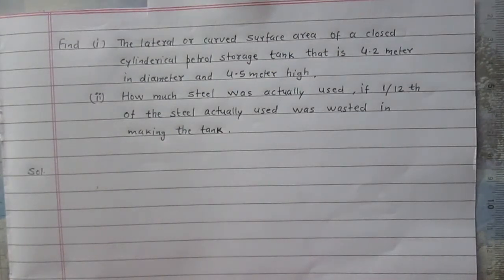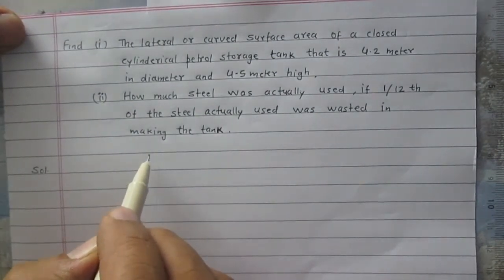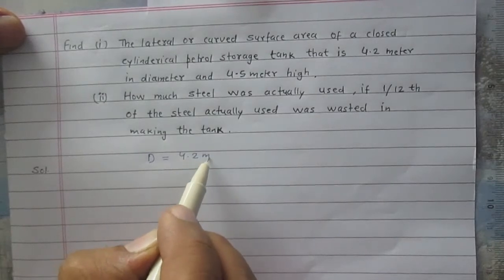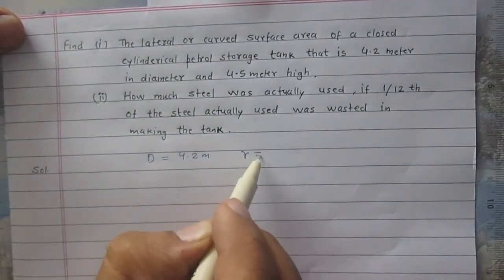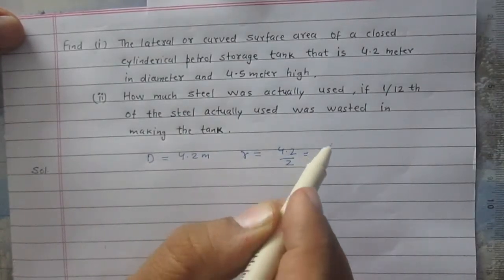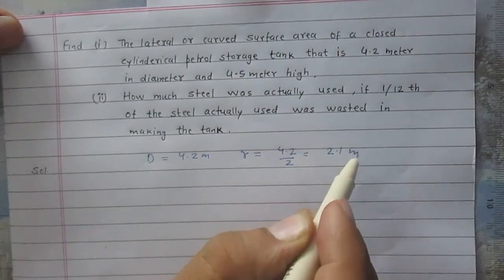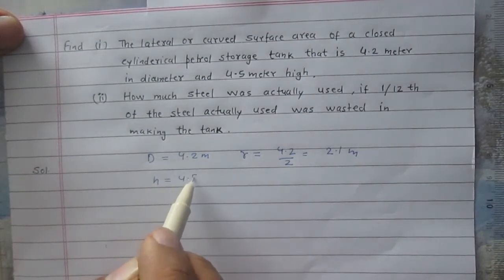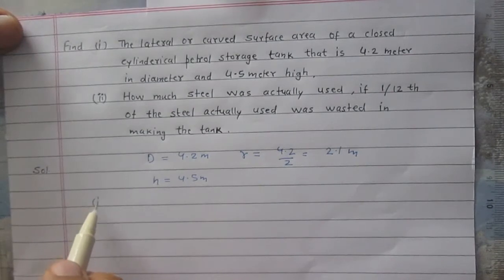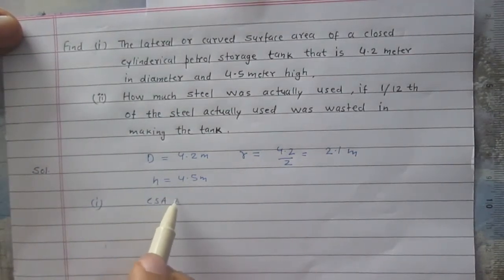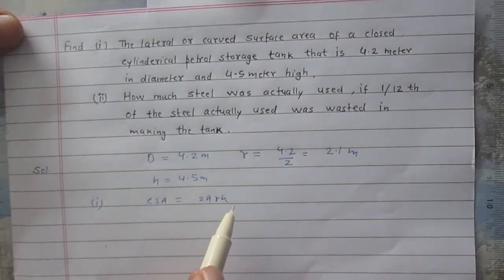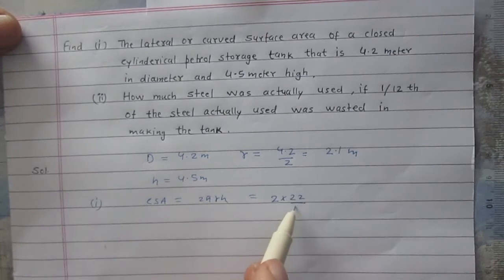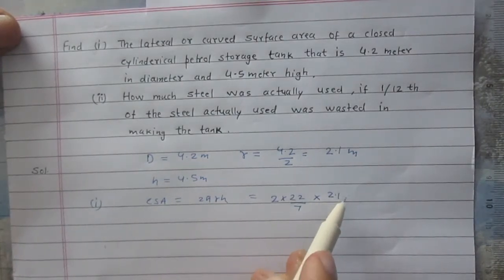We are given the dimensions of this cylindrical tank: its diameter is 4.2 meters, so the radius of the base will be half of the diameter — 4.2 divided by 2, which is 2.1 meters. The height of the cylinder is 4.5 meters. So we can easily find the curved surface area, which is 2πrh for a cylinder.